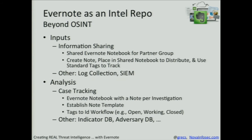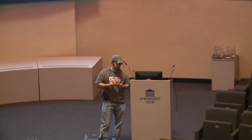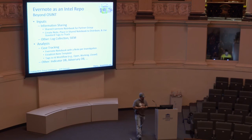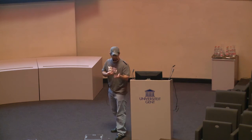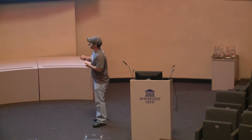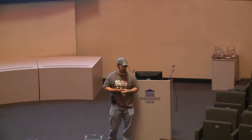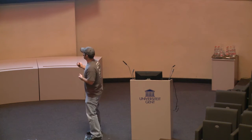Some other ideas: you could create a notebook for your indicator database — the true indicators you find that are focused on advanced attacks. From that maybe you could drive a campaign database, and from that an adversary database — a collection of everything associated with a certain adversary, which essentially are the TTPs, which is that top tier in the Pyramid of Pain.